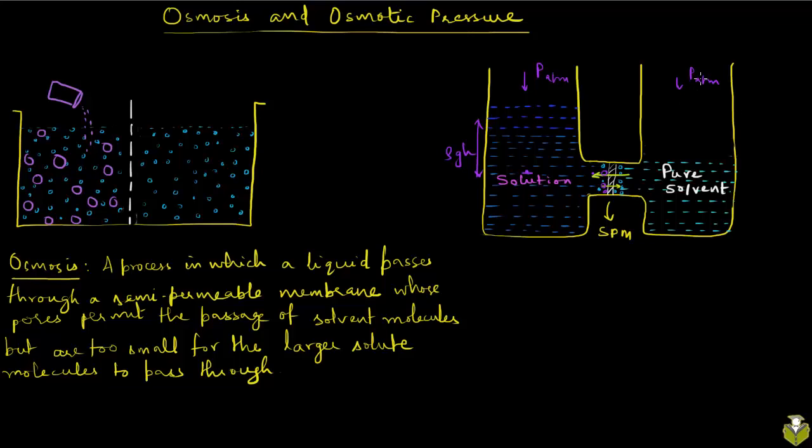So now in this case, the pressure was hydrostatic. You could also just apply an external pressure like you could use a piston and artificially apply the same pressure and prevent this osmotic flow. That pressure is in fact called osmotic pressure. In this case, it will be this difference here. That is the osmotic pressure.